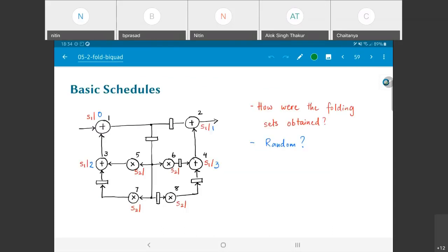Let us basically ask the question: how are these folding sets obtained? Was there any method to it or was it random? In other words, if I had just chosen random values for the folding sequence, right?